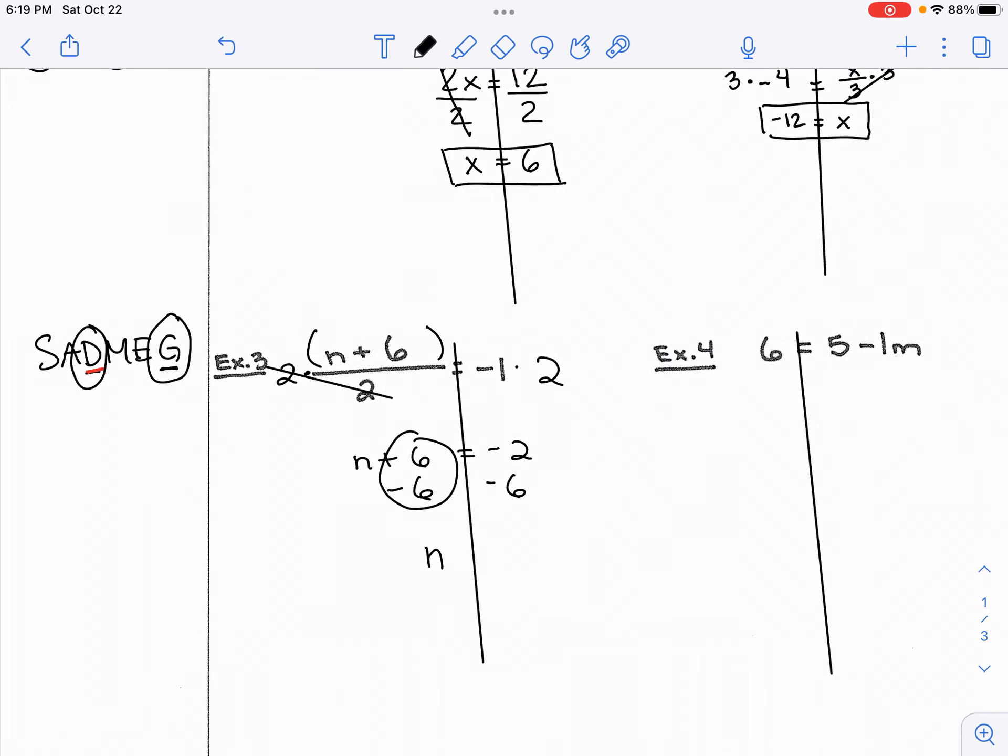n equal to, on the right side we have negative 2 minus 6. You can think this as owing $2 and owing $6, all together it's owing $8. So when they have the same sign you add and keep the sign. So our final answer here is n equal to negative 8. I will check the answer for this because I just want to prove why the solution, or why do we apply the inverse operation in this way.